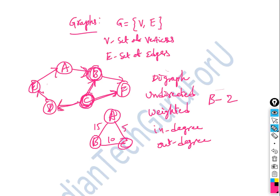For example, C to B, C to F, C to D — so the out-degree of C is 3. Graph types include: directed graph, undirected graph, weighted graph, in-degree of a graph, and out-degree of a graph.